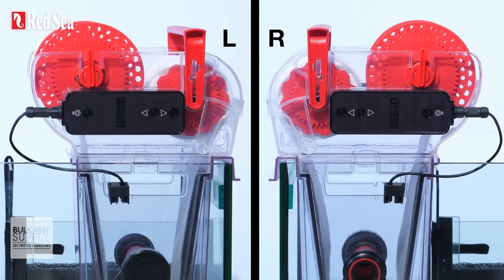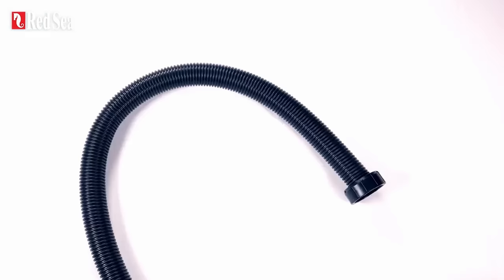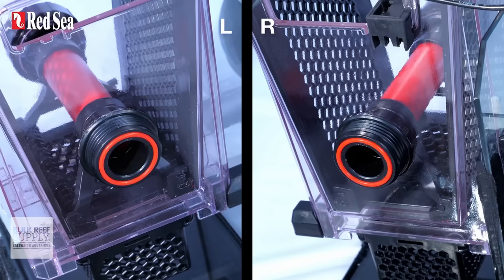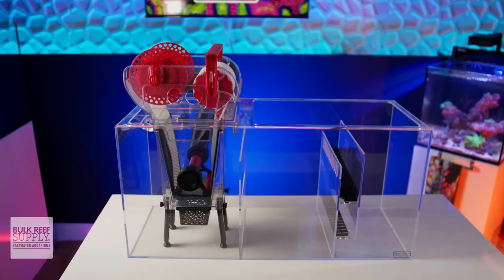The Reef Mat also offers ambidextrous installation with both the sensor and drive unit, as well as the hose connection being able to be installed on either side of the body, making it easier to adapt to a wider variety of sump and plumbing configurations.